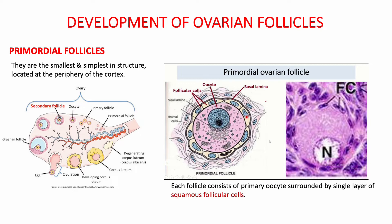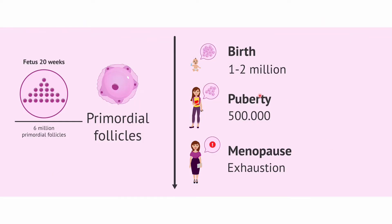Starting with follicle development, the smallest are the primordial follicles — the simplest in form and structure, located in the periphery of the cortex. Each consists of a primary oocyte surrounded by a single layer of squamous follicular cells. At birth, primordial follicles number about one to two million. During puberty, approximately five lakh primordial follicles remain, and as age progresses until menopause, these primordial follicles become completely exhausted.